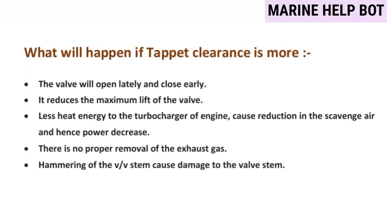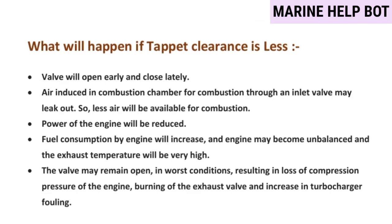Next, insert the feeler gauge into the clearance between the adjusting screw of the rocker arm and valve guard. Tighten the adjusting screw of the rocker arm little by little, fixing it at a point where the feeler gauge can be easily drawn out, then tighten the lock nut. After tightening, insert the feeler gauge again to confirm it can be easily drawn out. If tappet clearance is more, the valve will open late and close early, reducing maximum valve lift, sending less heat energy to the turbocharger, reducing scavenging, decreasing power, and causing hammering damage to the valve stem.